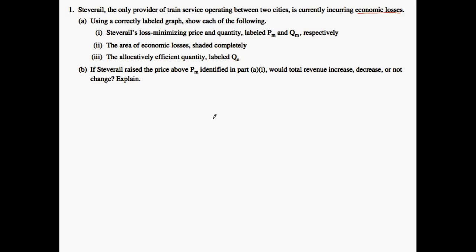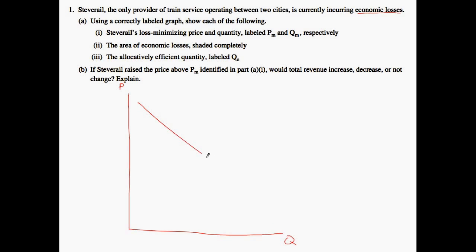First let's think about how we draw this. We have an economic loss of a monopolist, so we want to think about the standard price and quantity graph. We know first that we will have a downward sloping demand curve, and if you were to take the derivative of the demand curve you would get the marginal revenue. We also know we will have some sort of average total cost that is greater than the price we are setting. Let's think about what the marginal cost would look like.